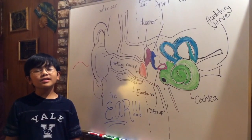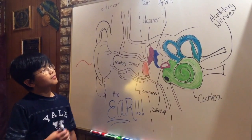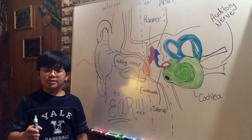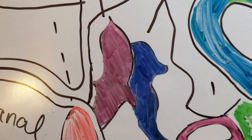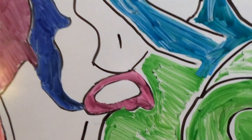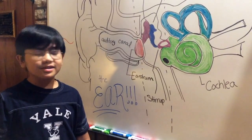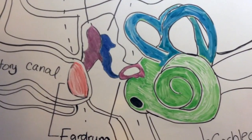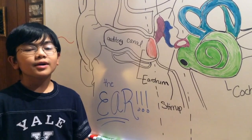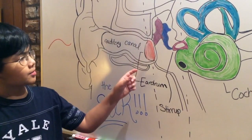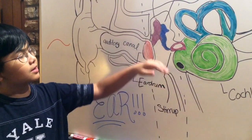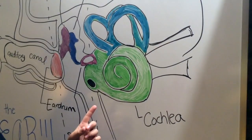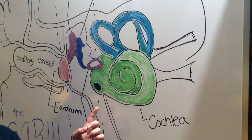The middle ear is an air-filled cavity, which its structure is made of three tiny bones: the hammer, the anvil, and the stirrup. These bones are connected to the eardrum at one end, and the cochlea at the other. When sound waves cause the eardrum to vibrate, it causes the little bones to vibrate and push against the cochlea. The cochlea makes up the inner ear.